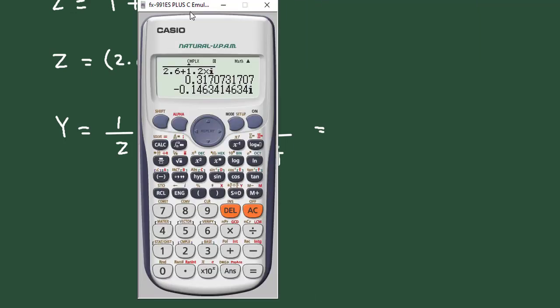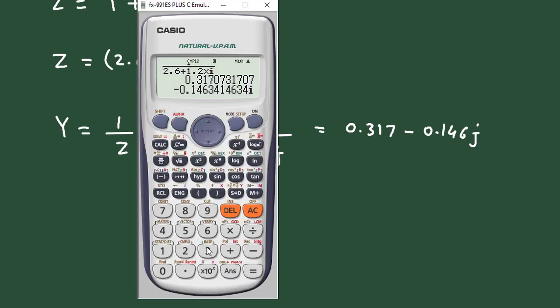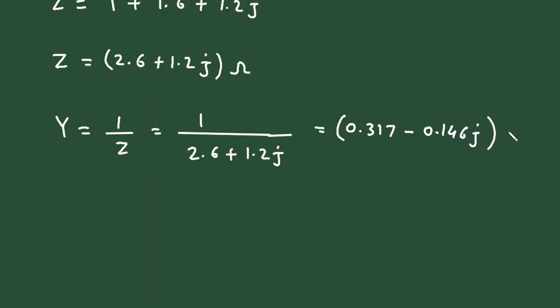It is 0.31, 0.317, then minus 0.146j. And since it is admittance, its unit will be Siemens. So Y equals this much value.